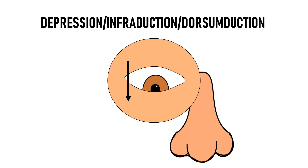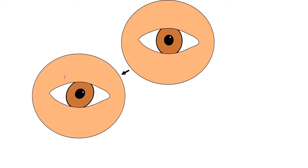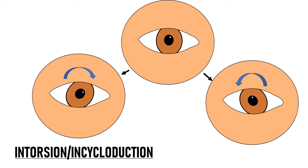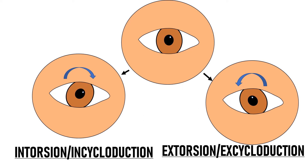When the eye moves down in the inferior direction it is known as depression, also known as infraduction or deorsumduction. Torsional eye movements are intorsion and extorsion. When the superior pole of the eye rotates nasally it is known as intorsion, also called incycloduction. When the superior pole rotates temporally it is known as extorsion, also called excycloduction.